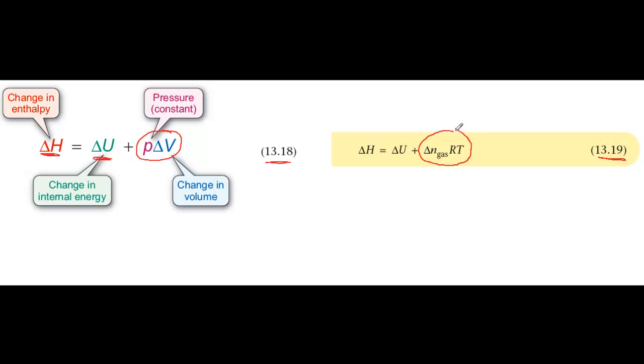If you're given the balanced equation for a reaction and asked to convert between delta U and delta H, you'll find equation 13.19 is the simplest to use, because you can work out delta N gas simply by looking at the equation.